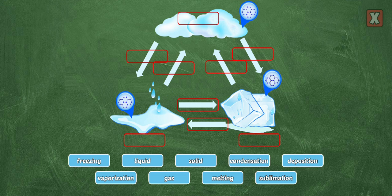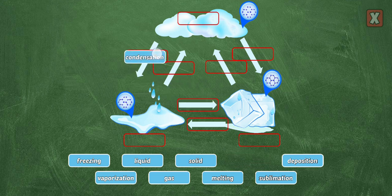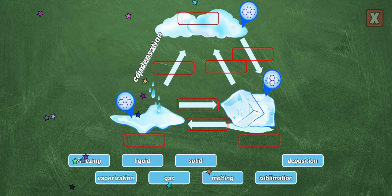Label the states of matter and the phase transitions. Condensation is when a gas becomes a liquid. When heat is taken away, the molecules move slower.